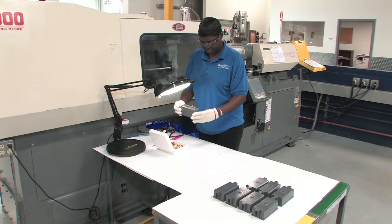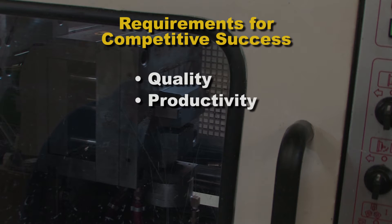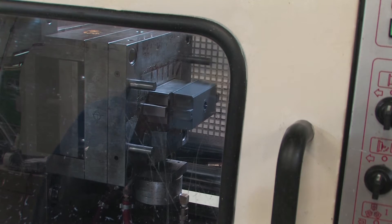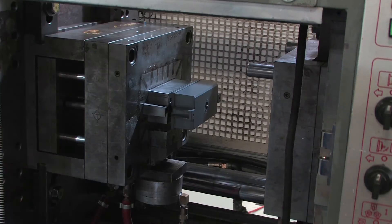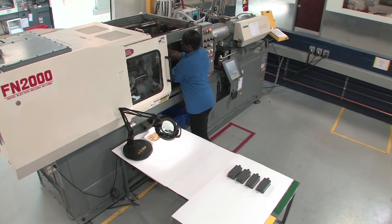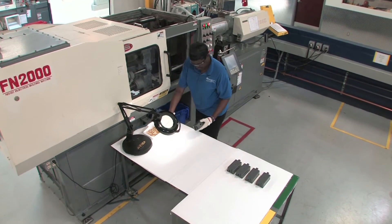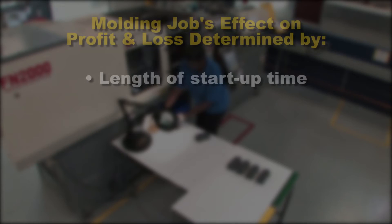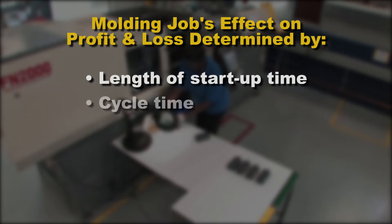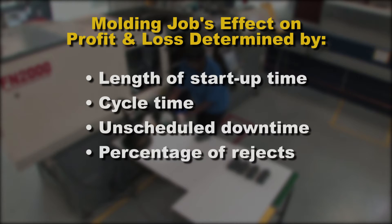There are two requirements for competitive success: quality and productivity, and they are closely related. Company profit is gained or lost at each molding machine on the production floor. The gains or losses are determined by four variables that determine production efficiency: the length of the startup time, the cycle time, the amount of unscheduled downtime, and the percentage of rejects.